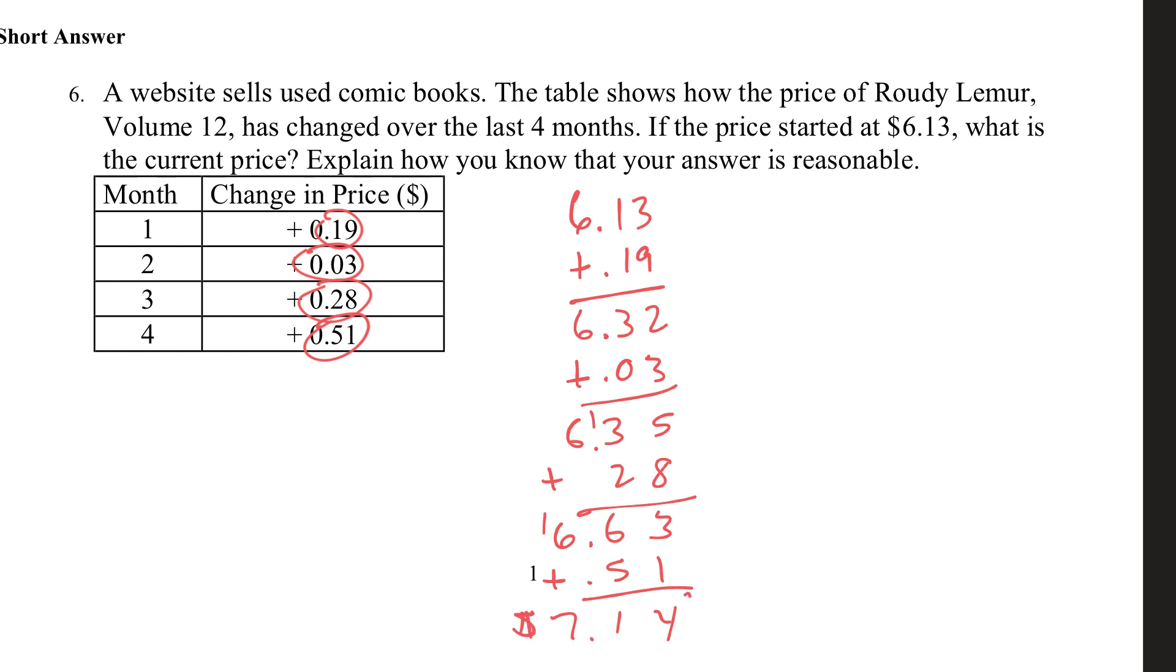So, what is the current price? It's $7.14 is the current price. How do I know that it's reasonable? Well, I would estimate. You know, if I started at 6.13, and it looks like I might go by 10s. Let me just estimate, right? 6.13 is pretty close to $6.10. I could do this quickly in my head. 19 cents is pretty close to 20 cents. So, plus another 20 cents. And then, plus 3 cents? Forget about it. I won't even add that. 28 cents is pretty close to 30 cents. Just kind of making them round numbers here. And then, 51 cents is pretty close to 50 cents. Then, what is this? This is a full dollar, isn't it? A full dollar, plus the $6 and 10 cents, would make it $7.10.